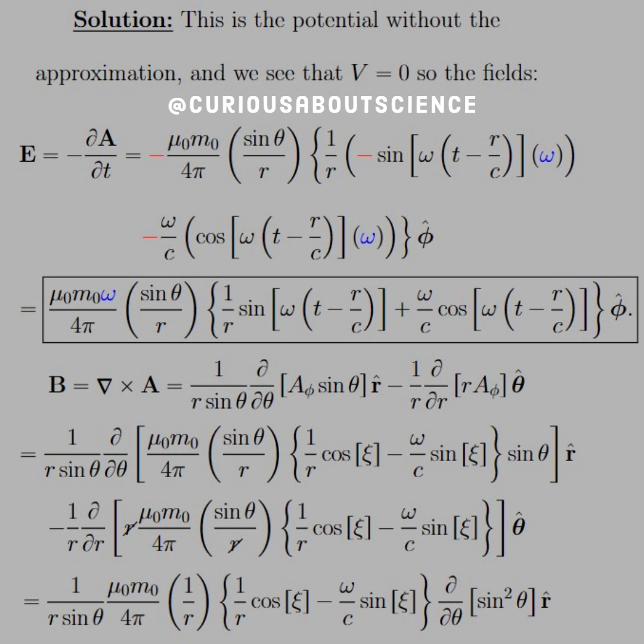So the potential without the approximation is what we put on the note page. So if we want to find the fields, well, again, for a magnetic dipole, the scalar potential is 0. So we only need to take the negative time derivative of A in order to find the electric field. So if we do that, you see here that we get ourselves into quite a little pickle, because now we have to take the chain rule with the omega, so we get an extra omega term in the simplification. Again, be aware of negative signs. They tend to creep up everywhere with these trig functions. Not too bad of a calculation, though.